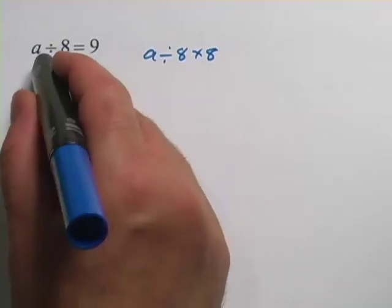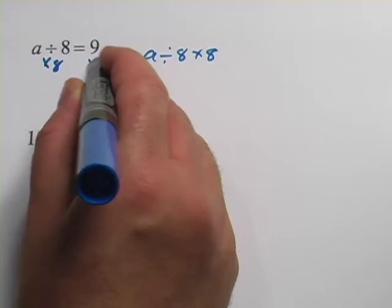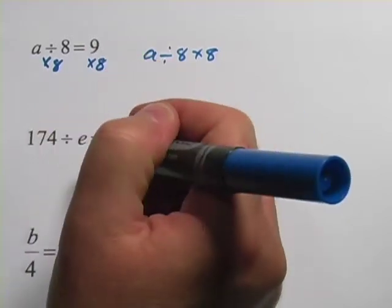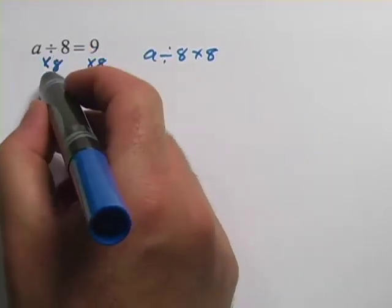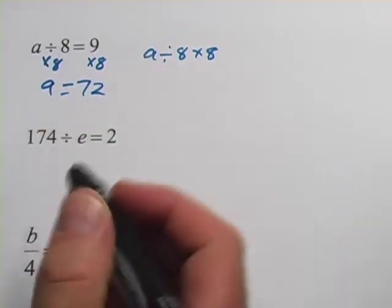So we can do that here. We can say times 8 and times 8, both sides multiply by 8. 8 divided by 8 times 8 is just a, and 9 times 8 is 72.